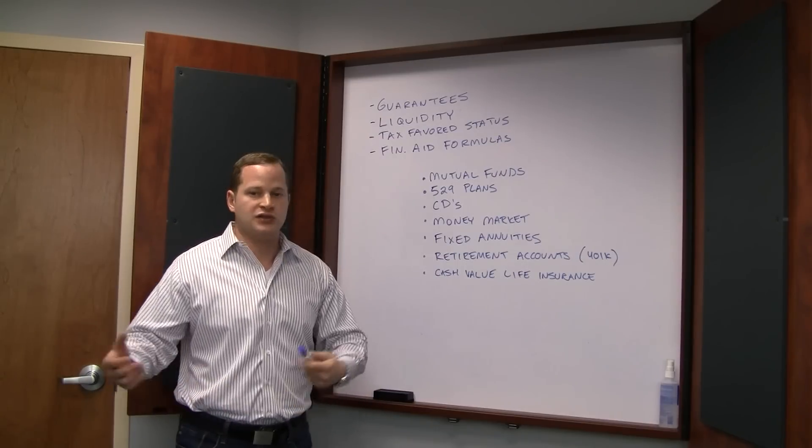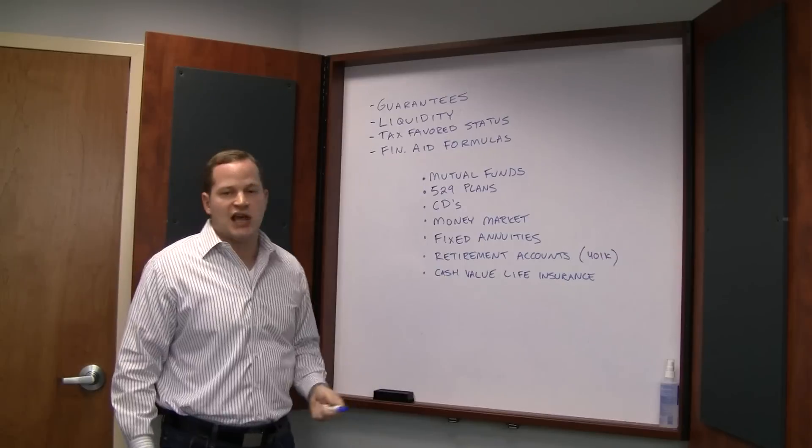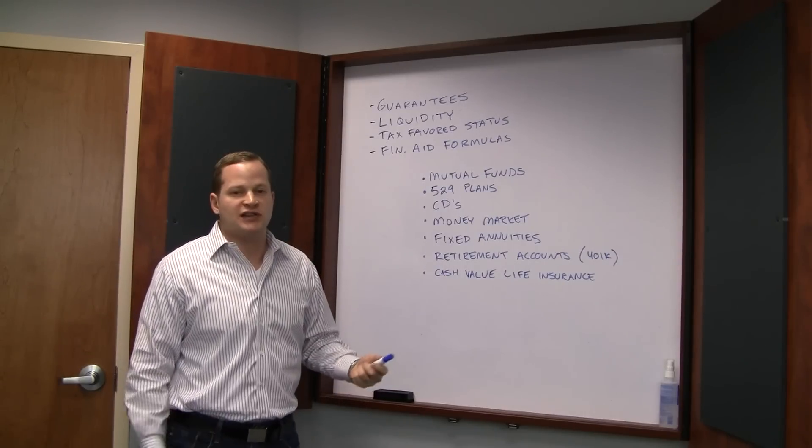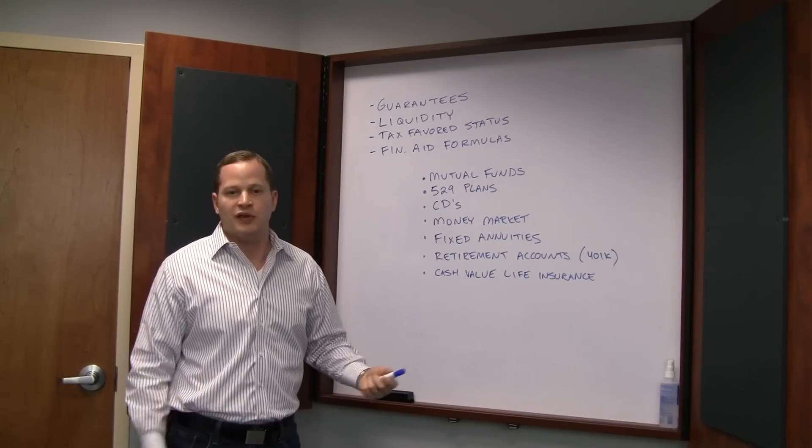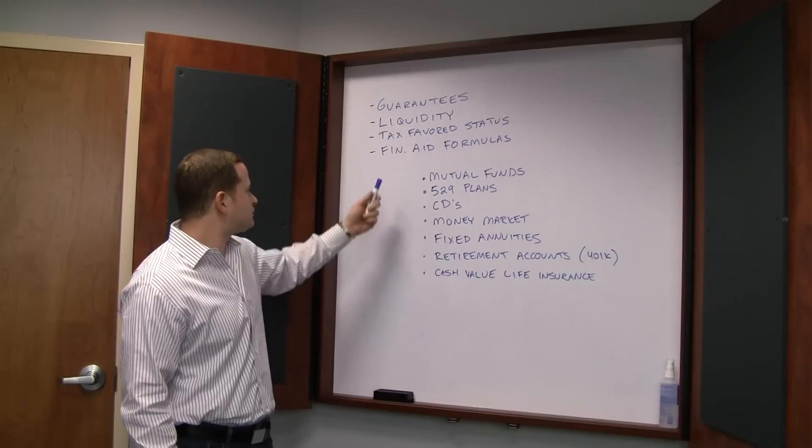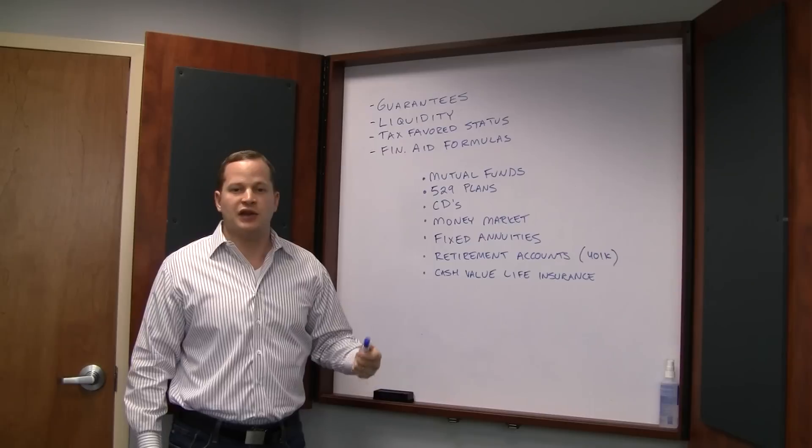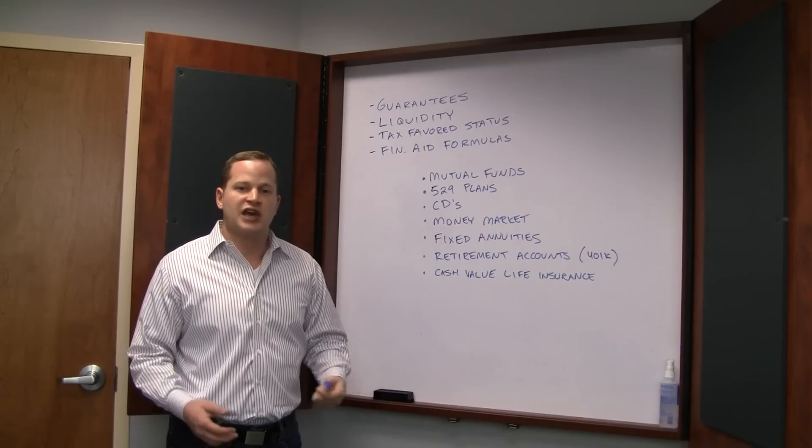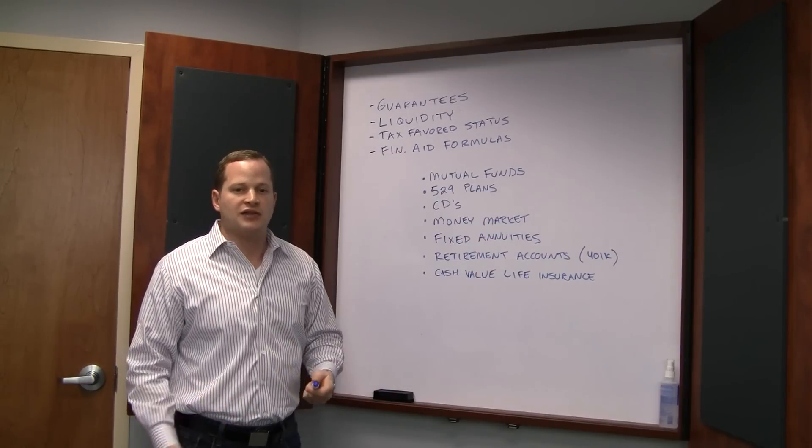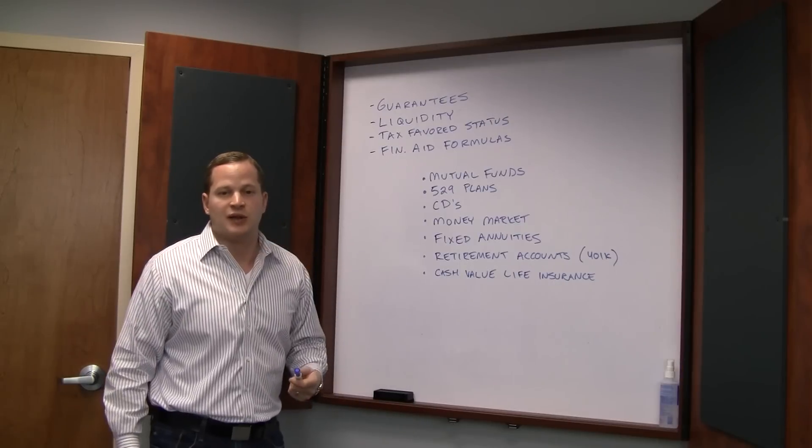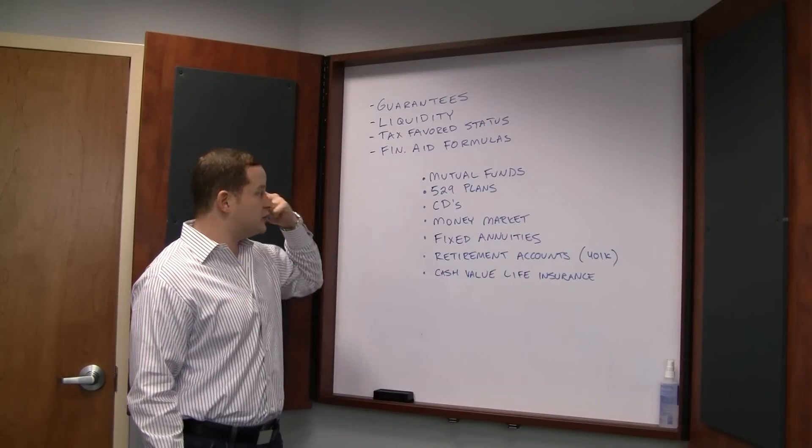Tax favored status - obviously if there's any tax advantages available in the plan, you want to take advantage of them. And financial aid formulas - how is the college savings plan going to impact financial aid? You've got to be aware of how the different accounts are going to affect you for financial aid. It depends a lot on the type of school you're looking at, but you want to be aware of them.